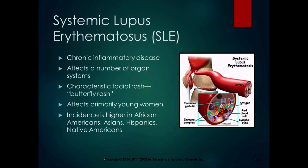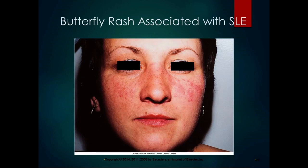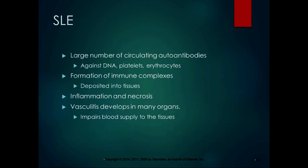There is no single lupus gene identified, but genes increasing susceptibility to autoimmune disorders have been found. In lupus, the pathophysiology involves a large number of circulating autoantibodies against your own DNA, platelets, erythrocytes, and other nucleic acids and nuclear materials. Immune complexes — especially those with anti-DNA antibodies — are deposited in connective tissue anywhere in the body, which activates the complement system and causes inflammation and necrosis.